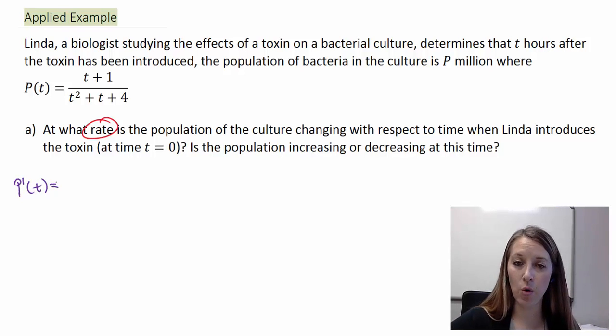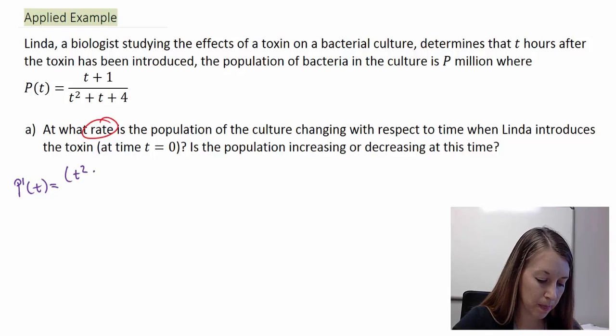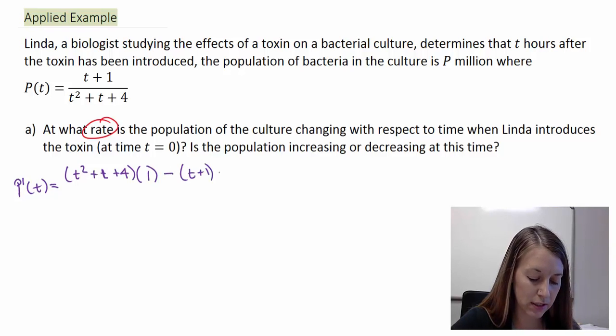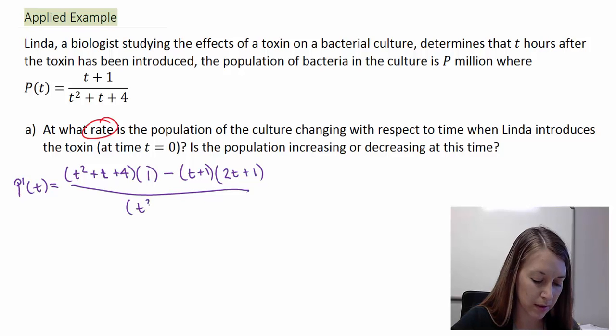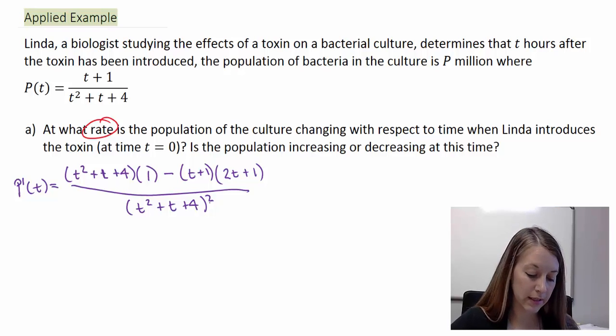We need to compute P prime of T. We see that we have a quotient in our original function or a fraction, so obviously we are going to have to do the quotient rule. We know the rule is low D high minus high D low. So low, or the bottom, D high, meaning the derivative of the high, minus high, the original on the top, D low, the derivative of the bottom. And that is all over the bottom squared.